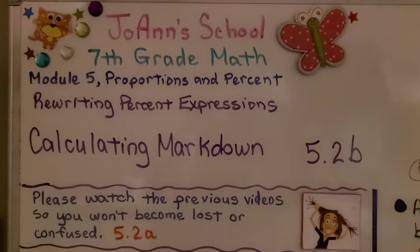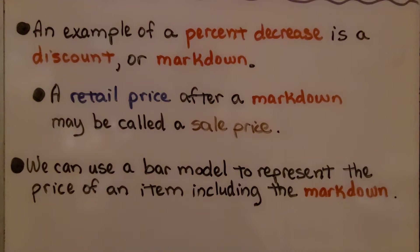5.2b calculating markdown. An example of a percent decrease is a discount or markdown. A retail price after a markdown may be called a sale price. We can use a bar model to represent the price of an item including the markdown.